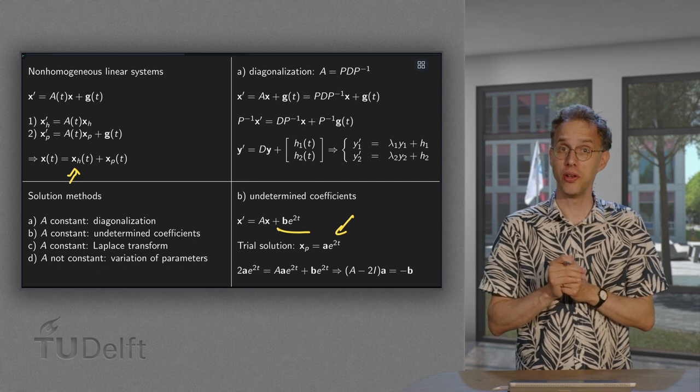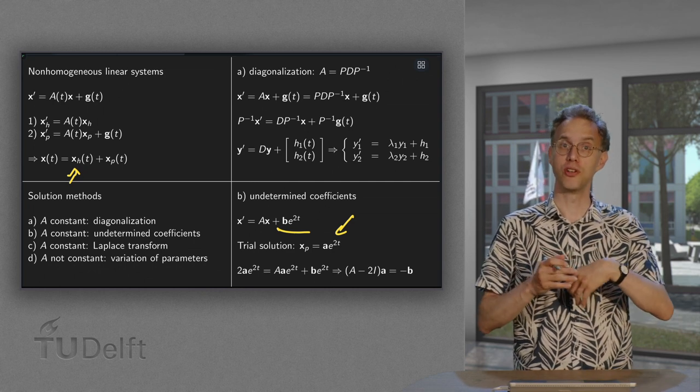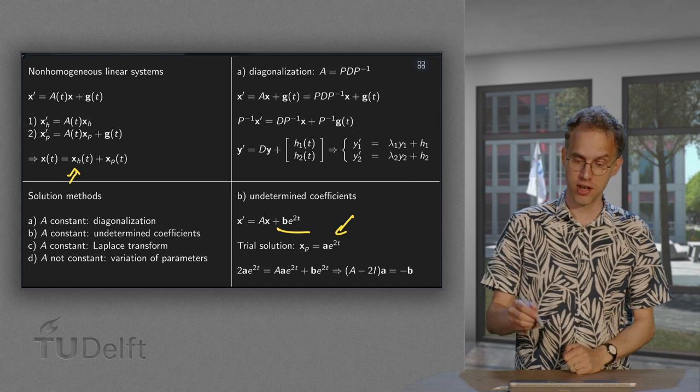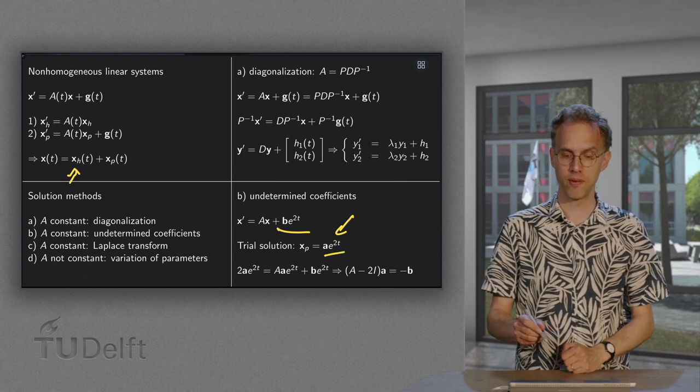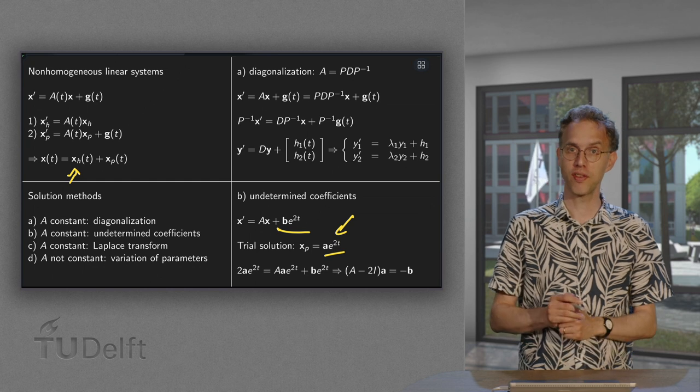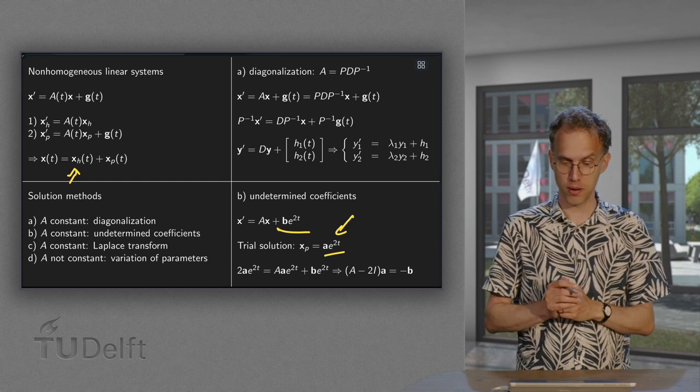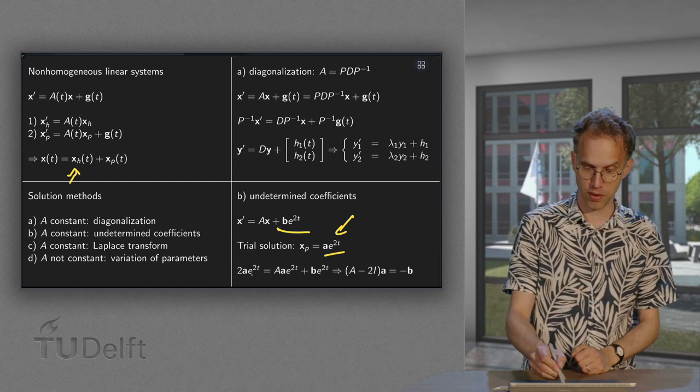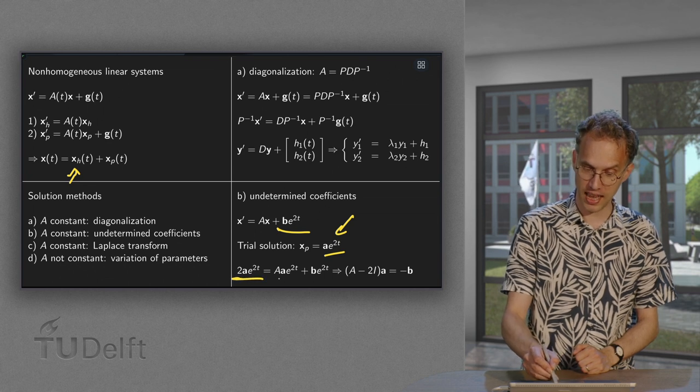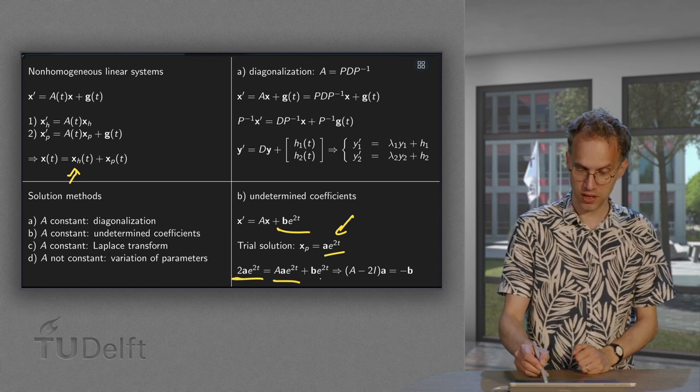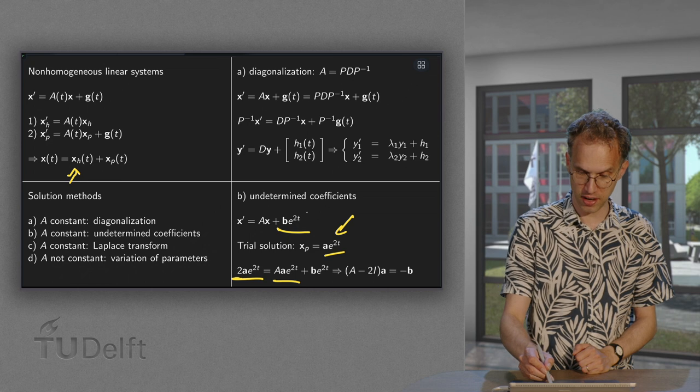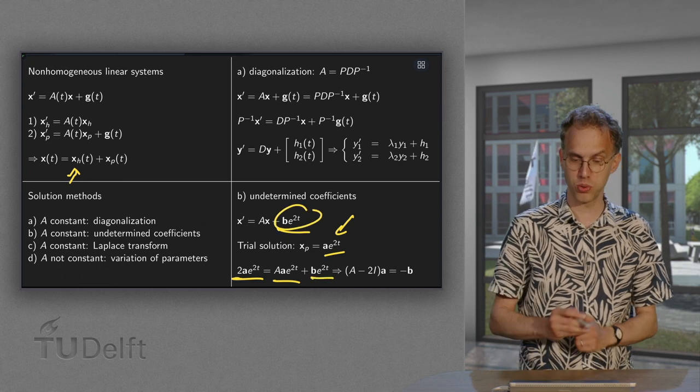And then find your particular solution using a trial solution like an unknown vector a. So there we have our undetermined coefficients. Those undetermined coefficients now become vectors. So undetermined vector a times e to the power 2t. Plug it into a differential equation. So x prime becomes 2 times a times e to the power 2t equals A times x plus the given b times e to the power 2t.